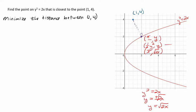I am going to use this one in the video here, but it might be good experimenting to try the other one. So we want to minimize the distance between the point (1, 4) and the point (one half y squared, y).